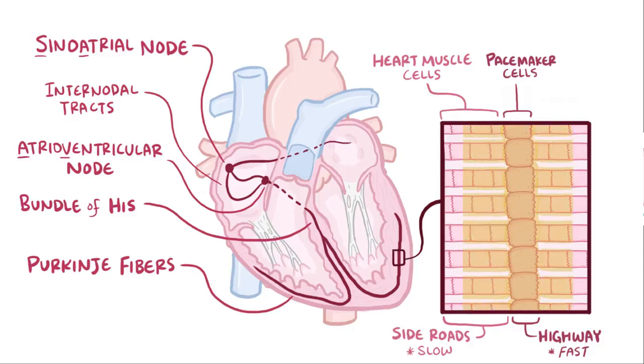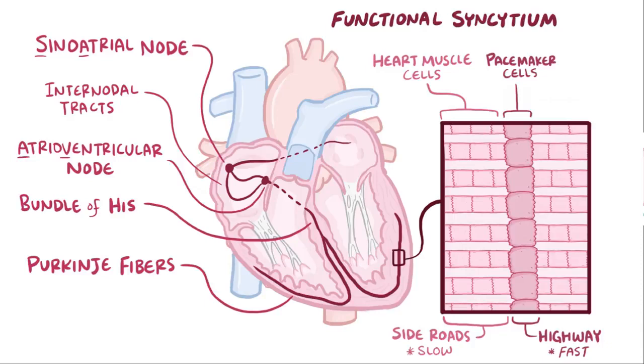This is important because we want all of the myocytes to pick up that action potential and contract at about the same time. We can call this whole system a functional syncytium, which means that the mechanical, chemical, and electrical connections between these cells allow them to act as one unit in some ways, and it's the pacemaker cells that can make all of this happen.